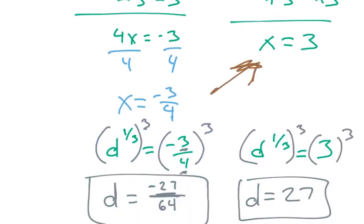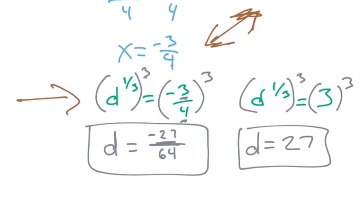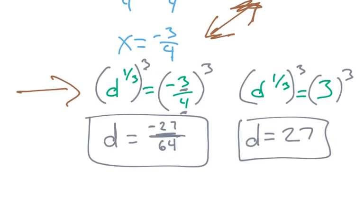I get my two values of x here and here. I replace it with d to the 1/3, because x is d to the 1/3. Simplify and solve, and you get your answer. Hopefully that makes sense, and I'll see you in the next video.